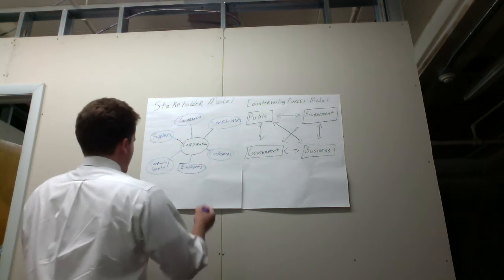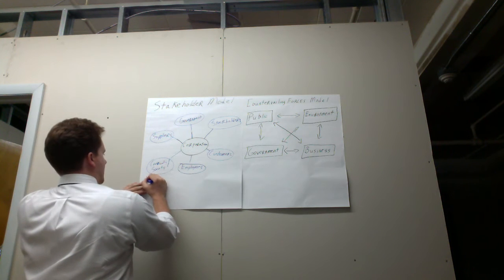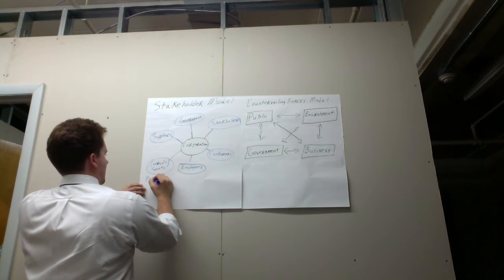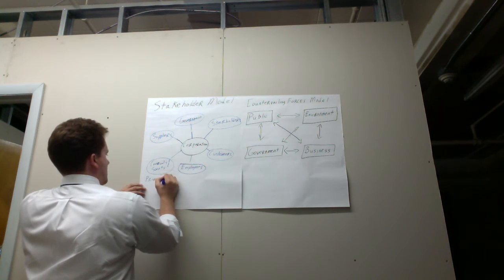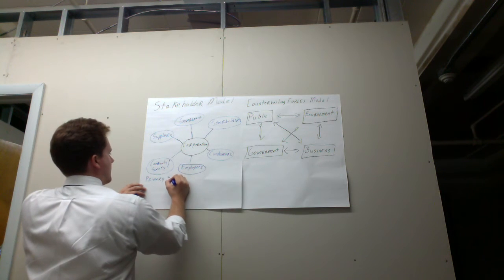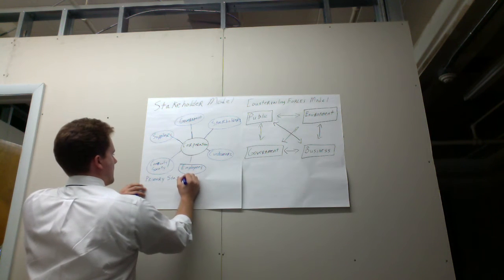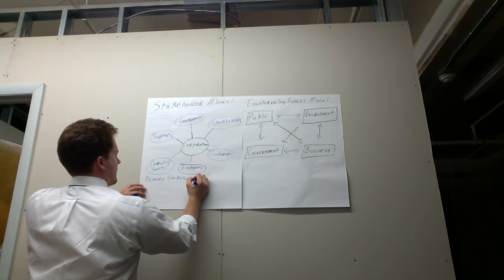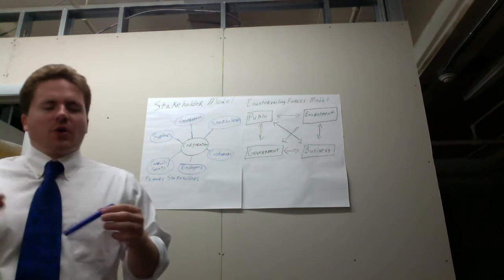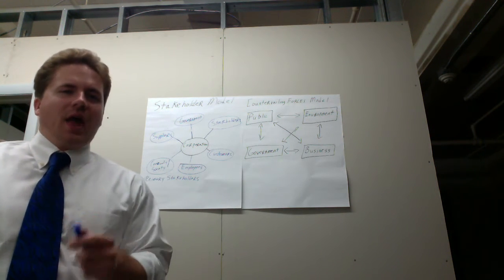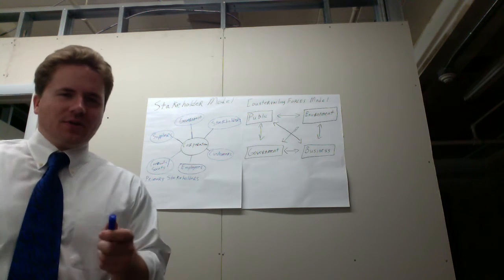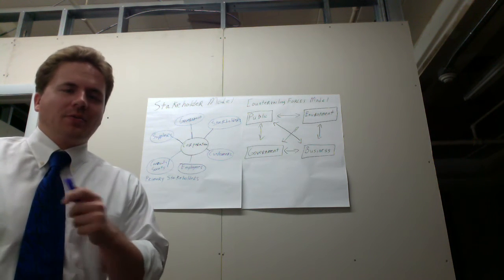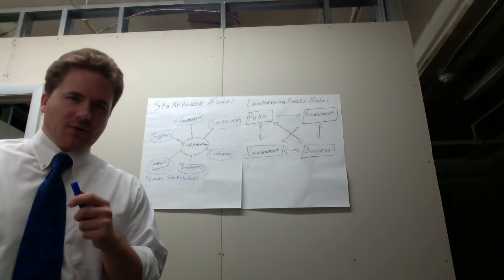So these people in blue are what we would call primary stakeholders. The corporation's actions have a direct and severe impact on the primary stakeholders, but also vice versa. Now we've got some other people.